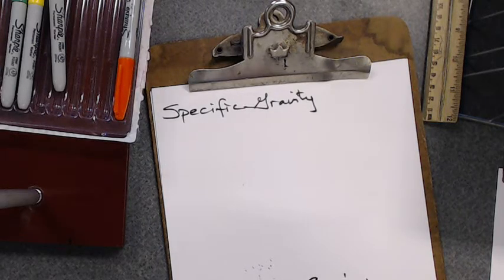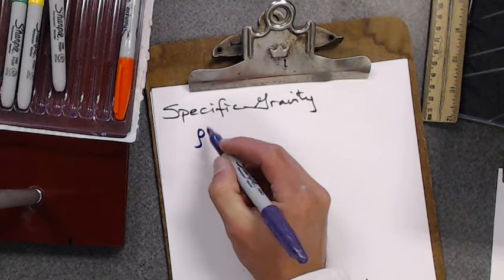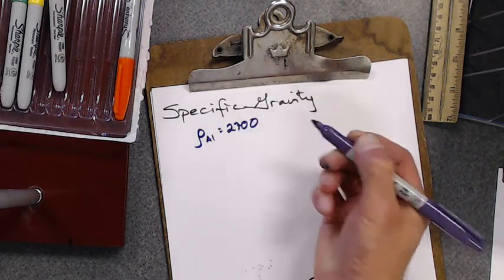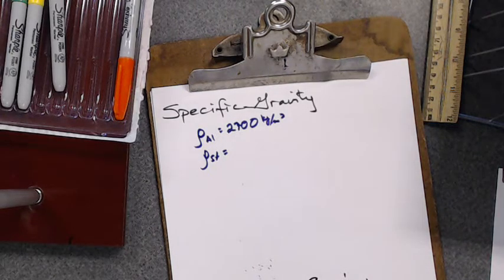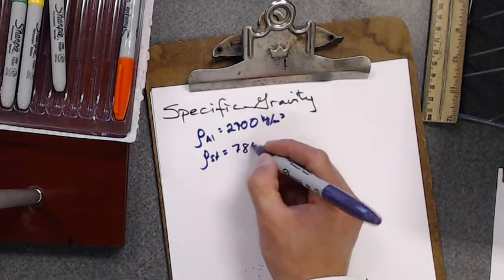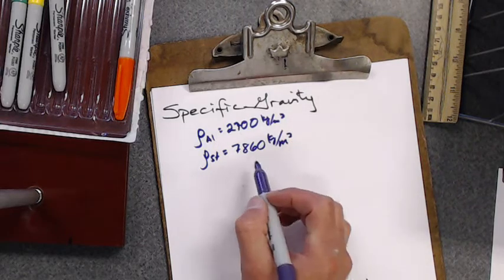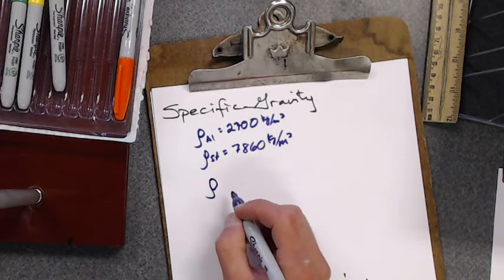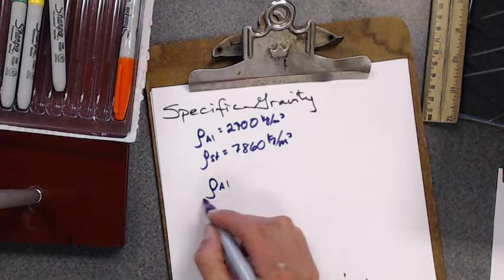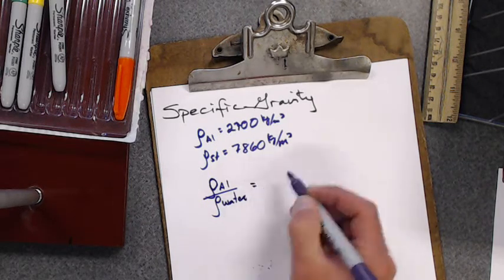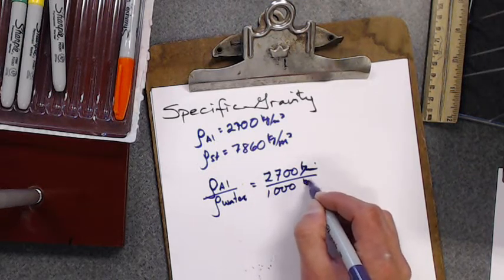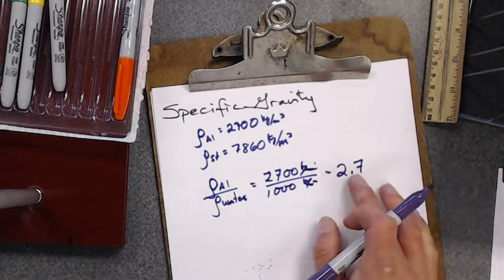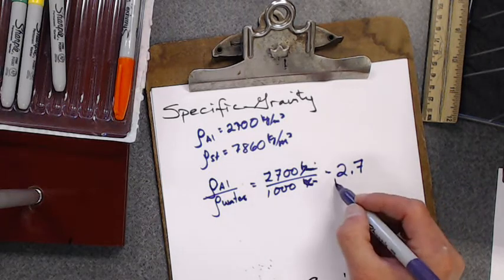Let's talk about specific gravity. When we look at densities of materials such as aluminum, which is 2700 kilograms per cubic meter, and steel at 7860 kilograms per cubic meter, these are really large numbers. So what we do is take our object and divide it by the density of water. We end up with 2700 divided by 1000 kilograms per cubic meter and get a unitless number: 2.7. It's in relation to water and now it's more manageable.